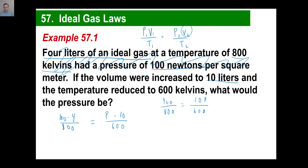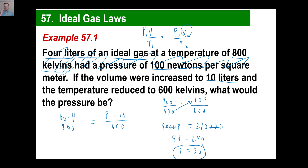Let's just cross multiply: 800 times 10 times P equals 400 times 600. Four times six is 24, add four zeros each side, hack off three zeros from each side. So 8 times P equals 240 — divide by 8 and the pressure is 30. No complicated algebra, nothing — you're just plugging stuff in. These types of problems in your problem sets should be ones you go bing bing bing and you're done in like one minute.